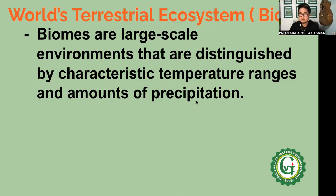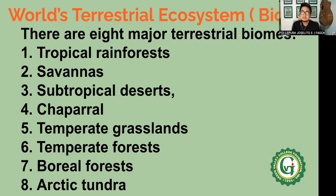Your biomes are large-scale environments that are distinguished by characteristic temperature ranges and amounts of precipitation. On a greater scale, your biomes are environments for short. For example, your biome will be a more general term used to describe a larger environment, such as your desert. Now, there are eight major terrestrial biomes which were classified.